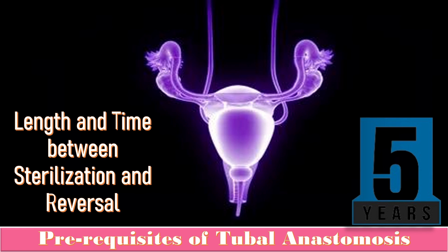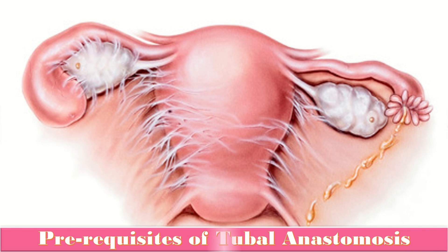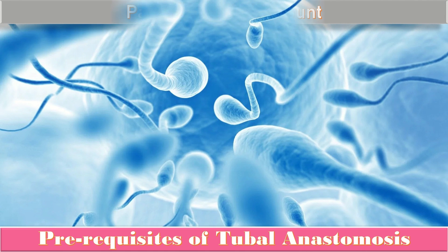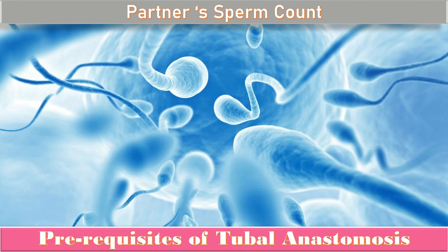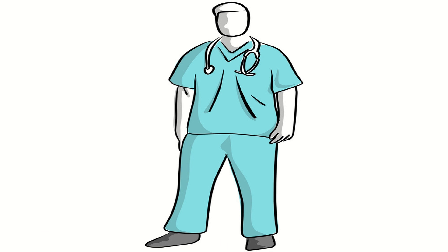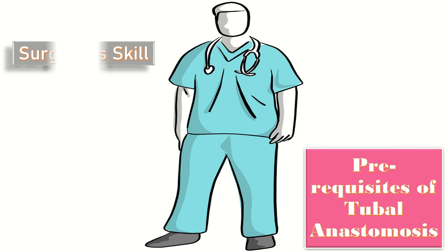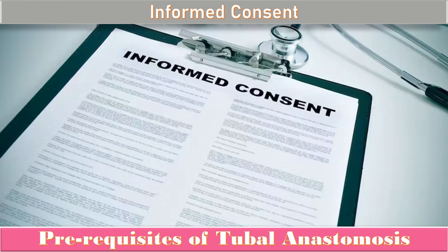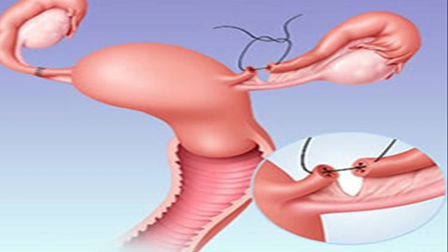After five years of sterilization, the tubes are usually severely damaged with flattening of the epithelium. The amount of scar tissue in the pelvic area also makes the anastomosis difficult. The partner's sperm count also plays a great role in future fertility. Tubal anastomosis also depends upon the surgeon's skill, and last but not least, informed consent must be obtained.